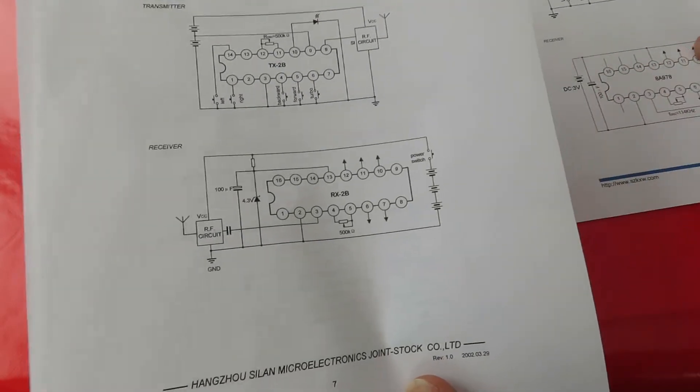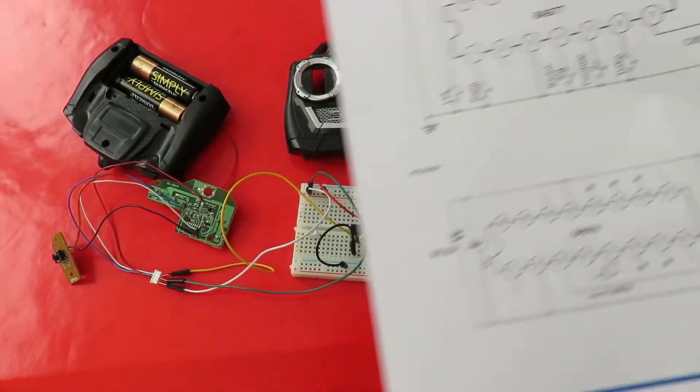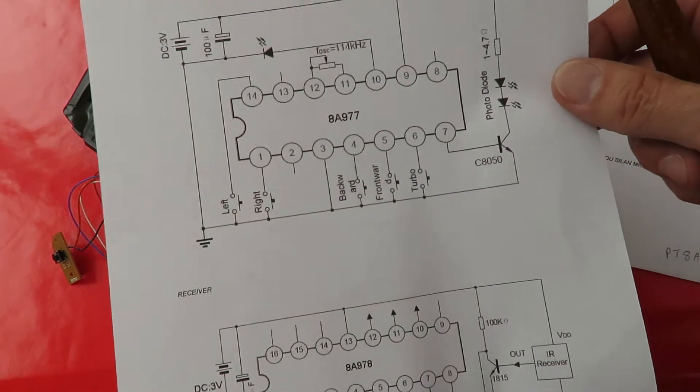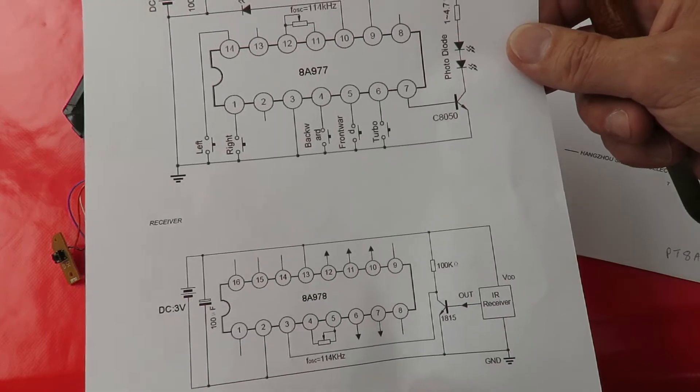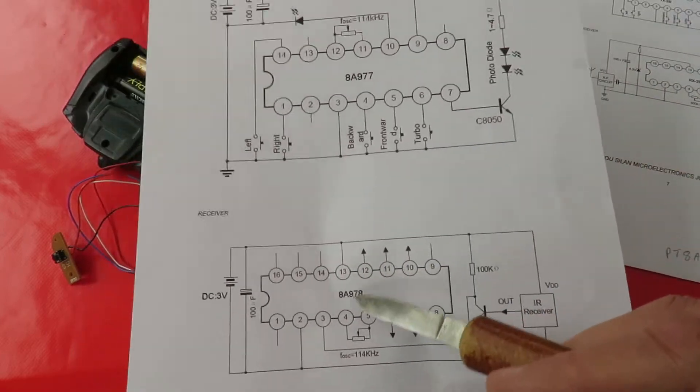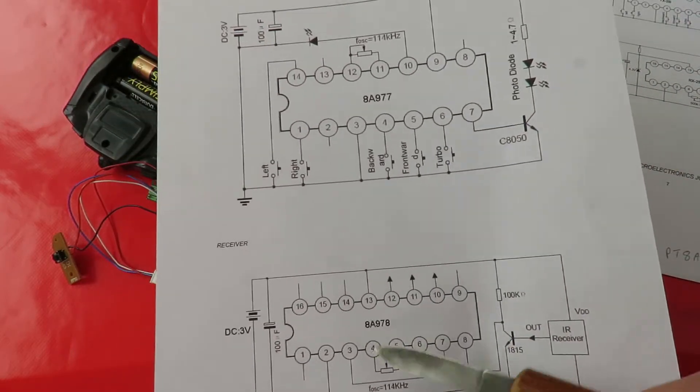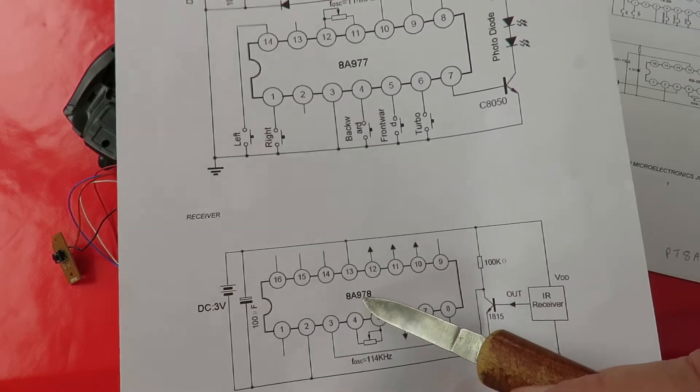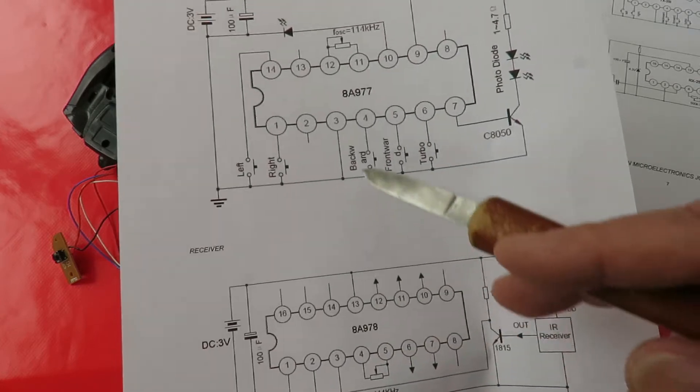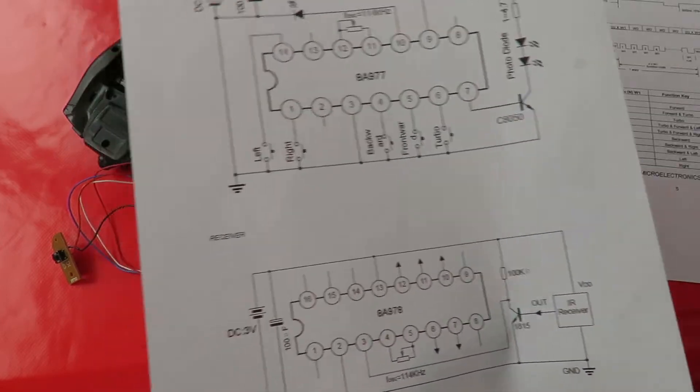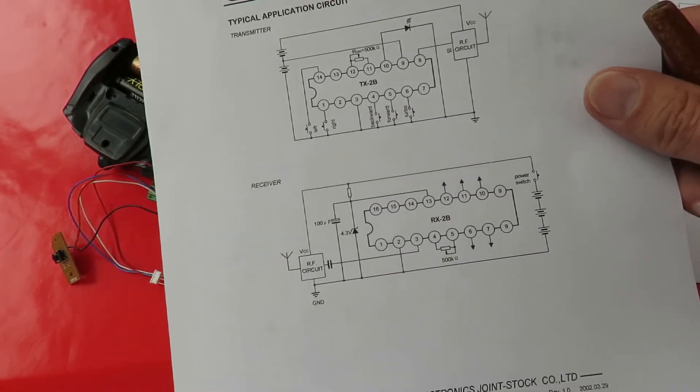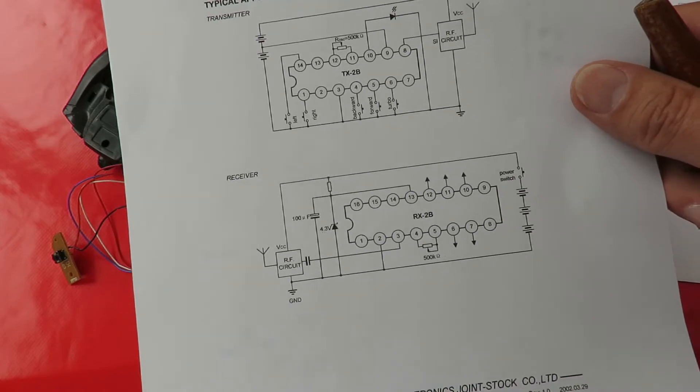I'm just looking to see what that circuit board will show us. Oh, this is actually an 8A978 chip and an 8A977 chip, but they are identical to the TX2B and the RX2B in pin outs anyway.